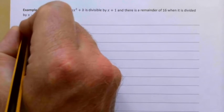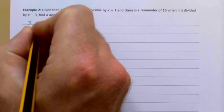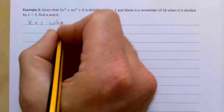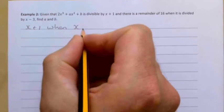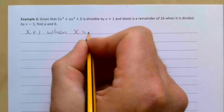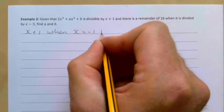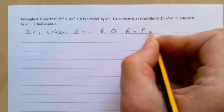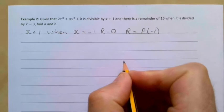First, the x + 1 part. If x + 1 is a factor, that means when x = -1, then r = 0, as in there's no remainder. So r = P(-1).